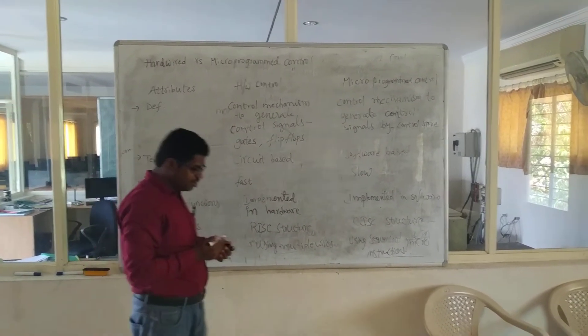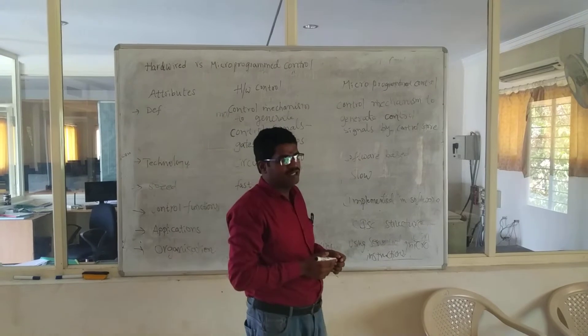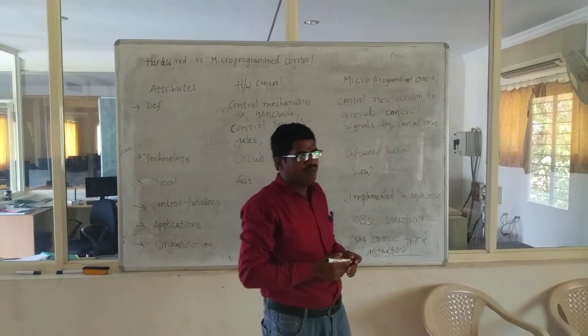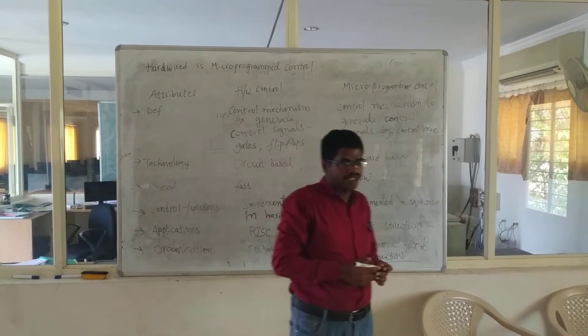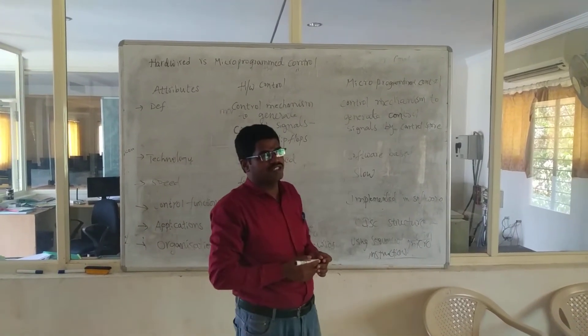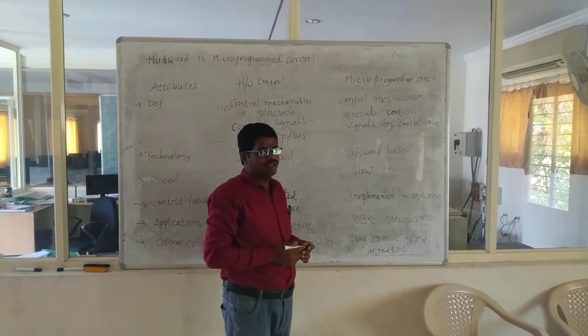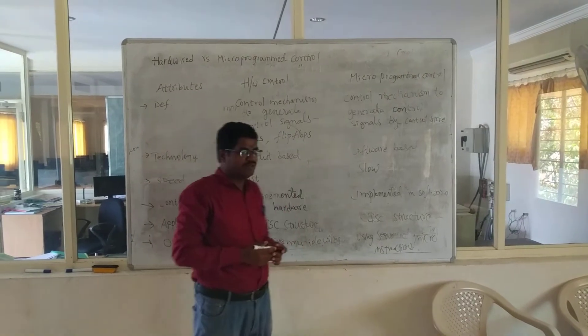Control units are divided into two parts: one is hardwired control and the other is microprogrammed control. In previous sessions I have explained about the organization of microprogrammed control also.